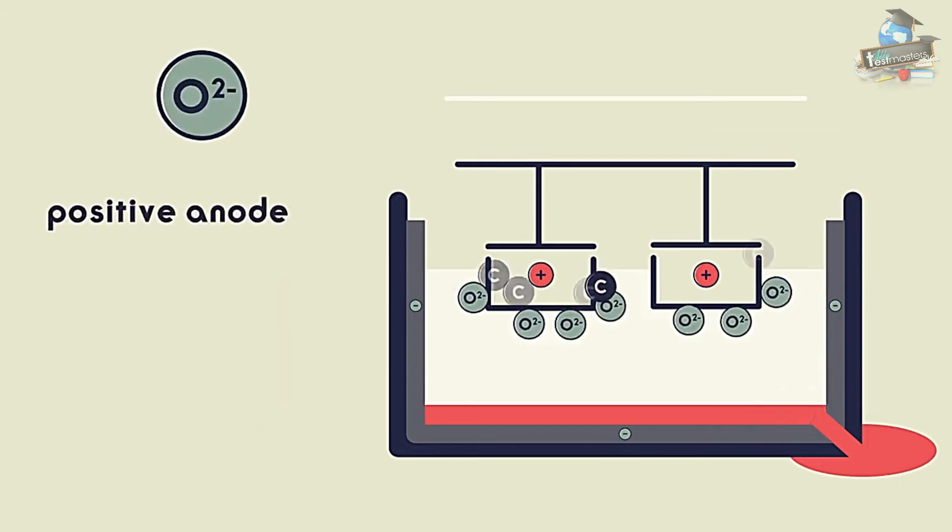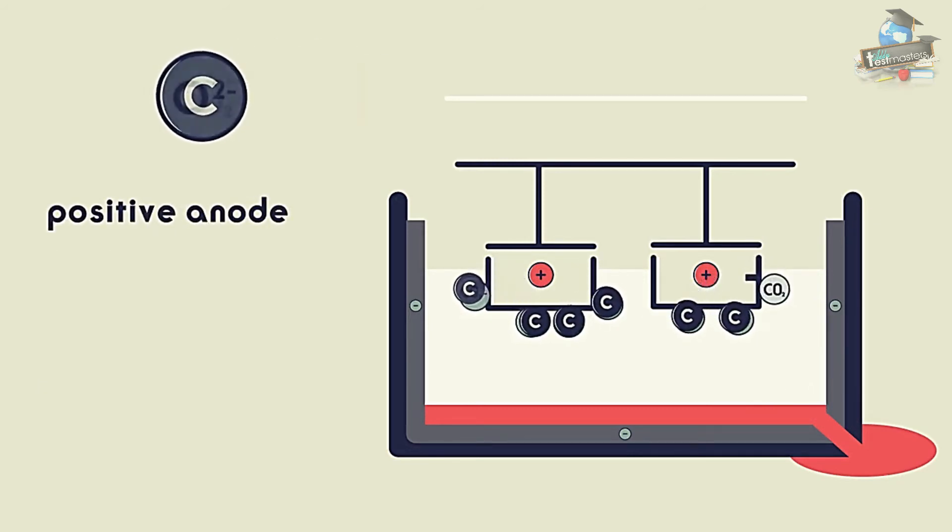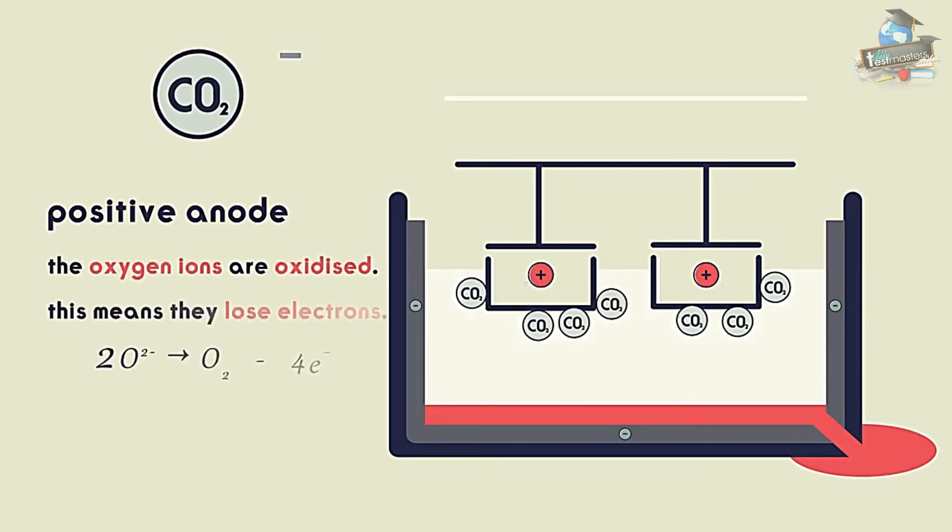At the positive anode where the oxygen reacts with carbon to make carbon dioxide, the oxygen ions are oxidised. This means they lose electrons.